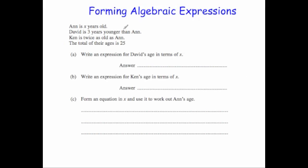This time it's a different type of context, we're looking at the ages of people. Anne is x years old, David is 3 years younger than Anne. The first question says write down an expression for David's age. Well she's x and he's 3 years younger. So if she was 30 he'd be 27, if she was 100 he'd be 97, if she was 8 he'd be 5. You're taking off 3 years from her age. So his age would be x take away 3 because he's 3 years younger.